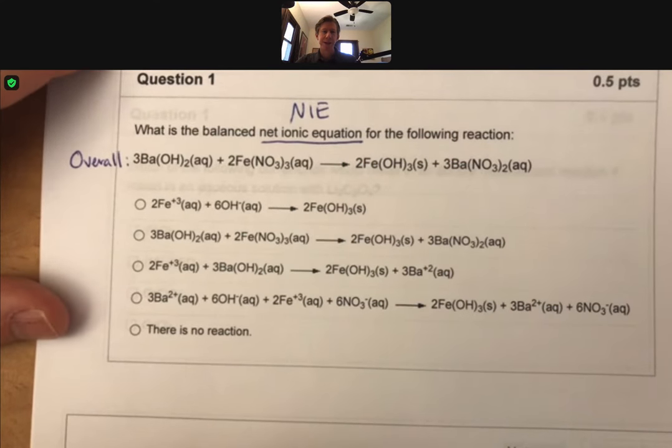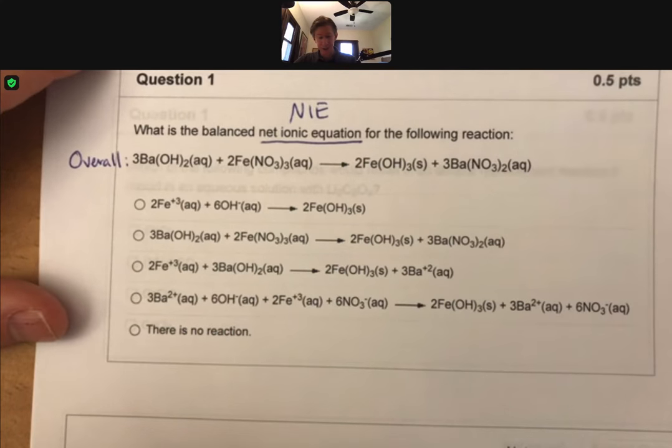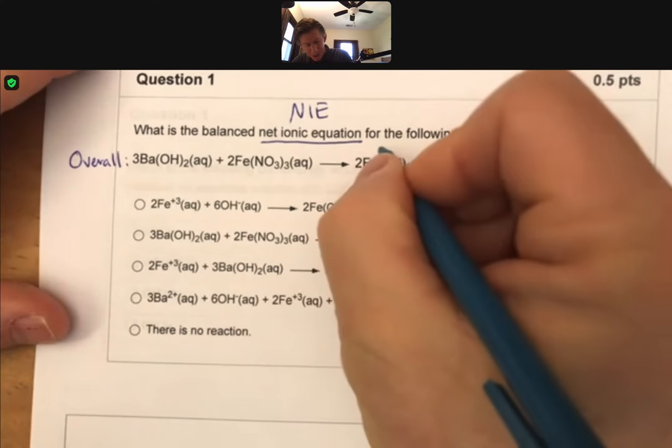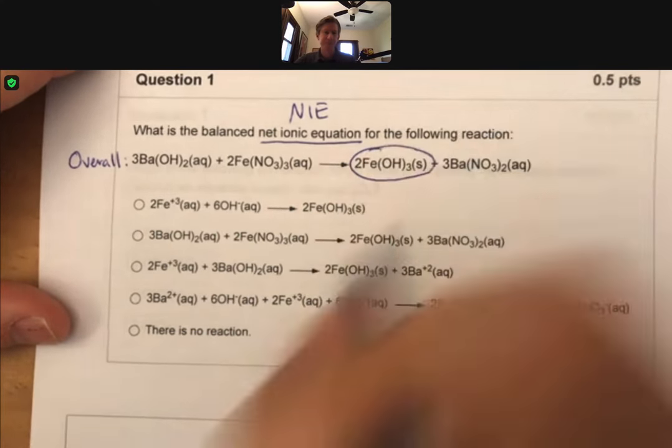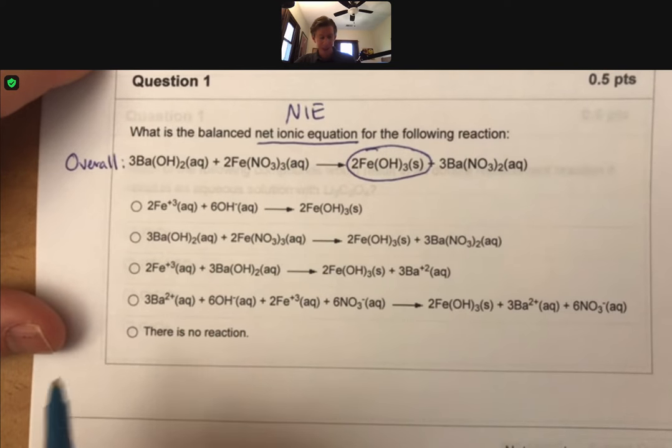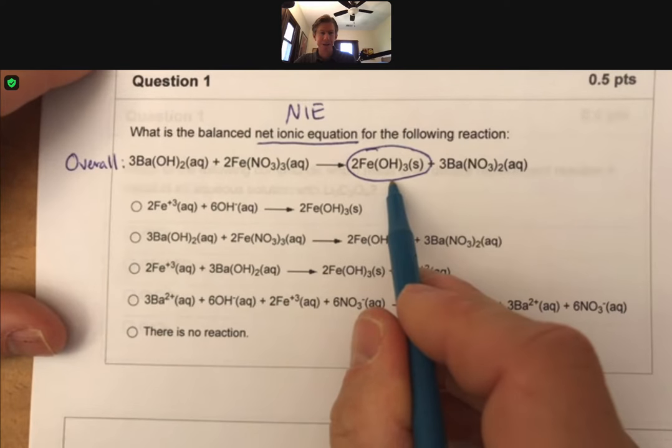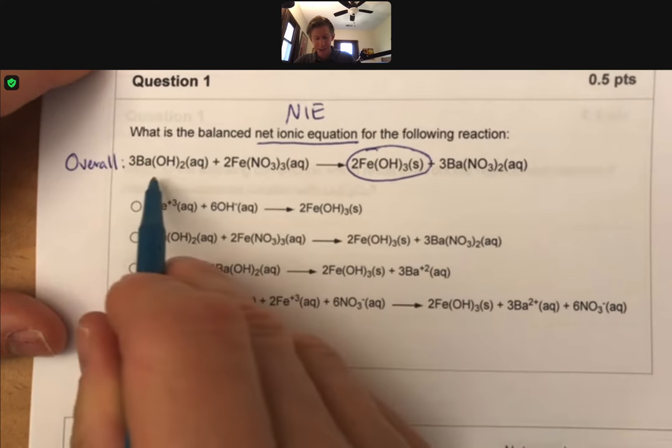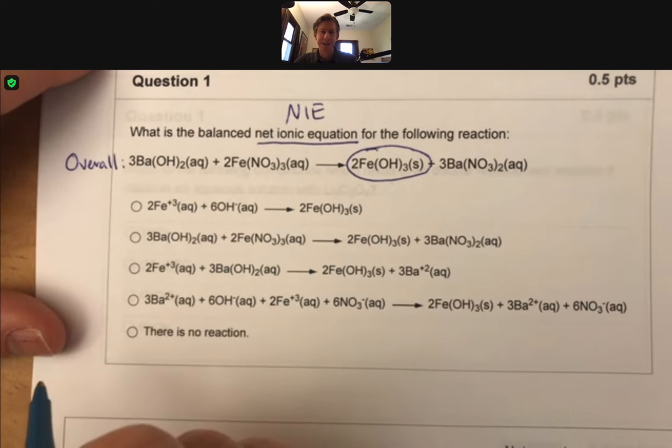The way I would suggest you go about this is, we're telling you everything that happens here, and you can see this solid right here. In the net ionic equation, you're going to have whatever is in the solid and the ions that are part of it on the reactant side.